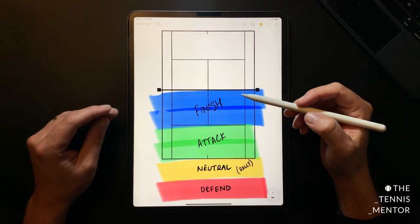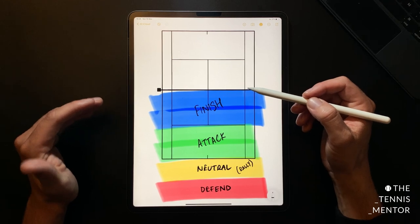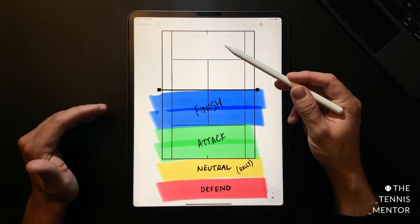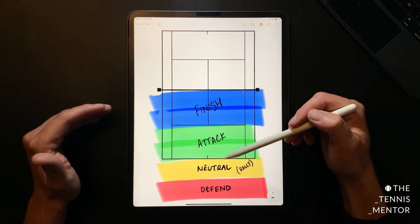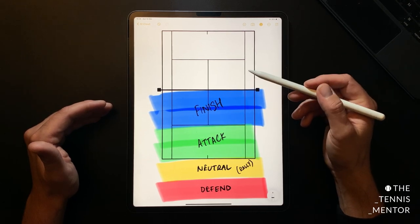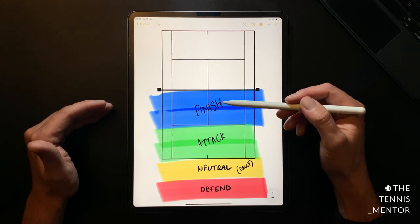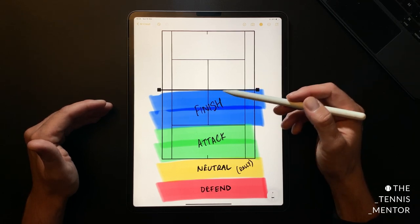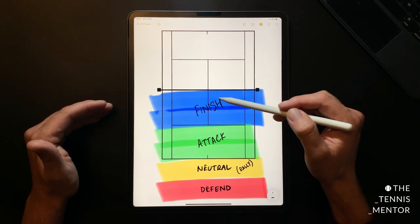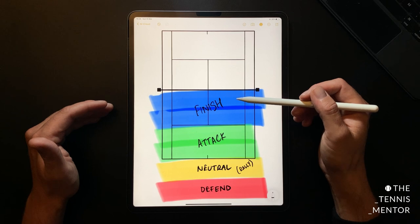The reason this is the finishing zone is if you hit a shot in this zone and you don't finish the point you're going to be fairly vulnerable. Your opponent will have the opportunity to hit a passing shot, they'll be able to lob you, or you're going to have to retreat and you'll find yourself somewhere in no man's land. So your aim when you're in this zone is to finish the point within that next ball. This can be done through power, it can be done through drop shots and angles. Your priority is to end the point when you're in this blue zone.